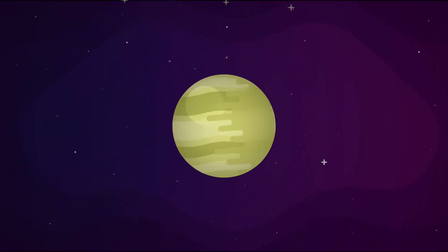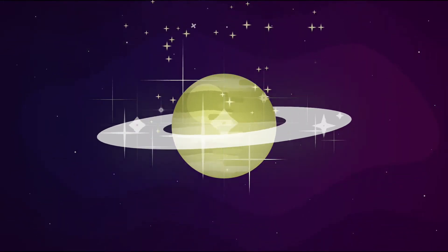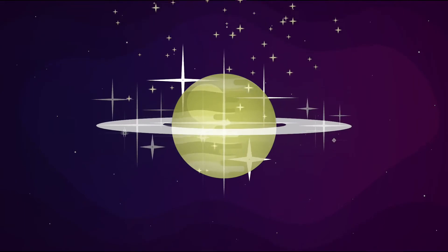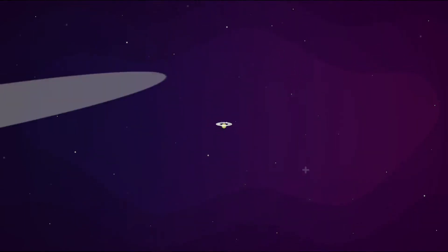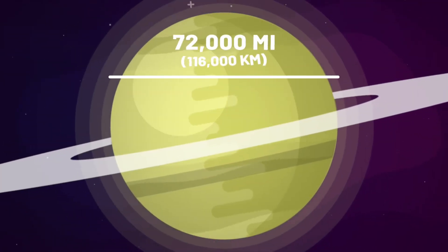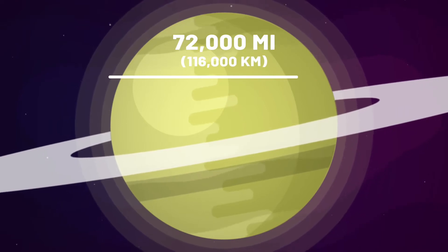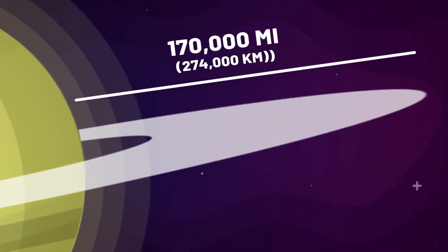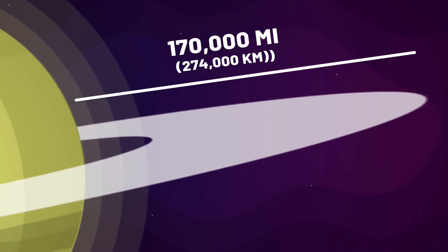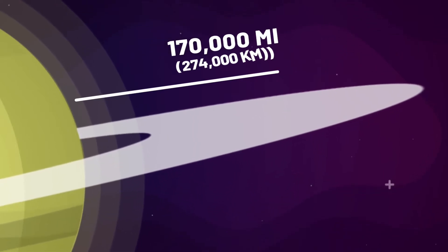But something else makes Saturn the celebrity of our solar system. Those rings! Even the planet's incredible 72,000-mile diameter pales by comparison to Saturn's shimmering rings, which extend for 170,000 miles, possibly even farther.